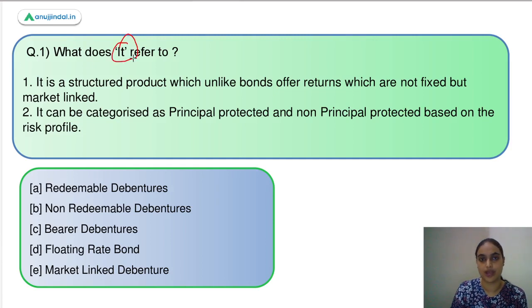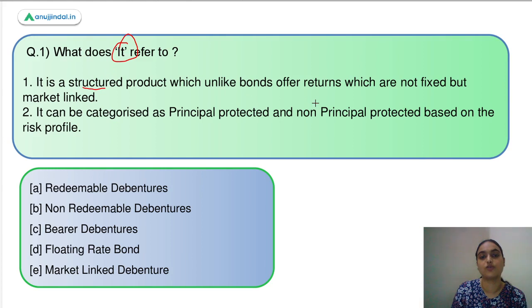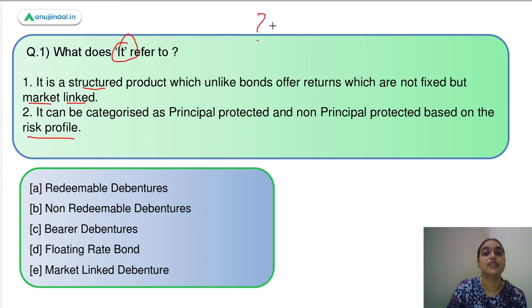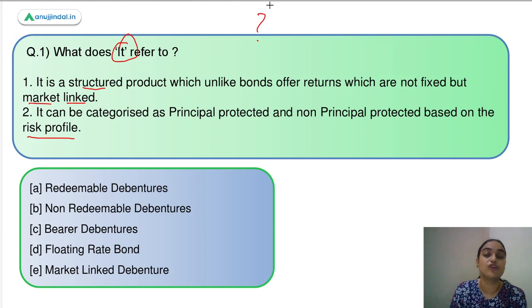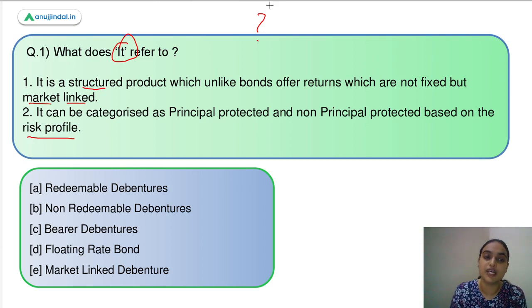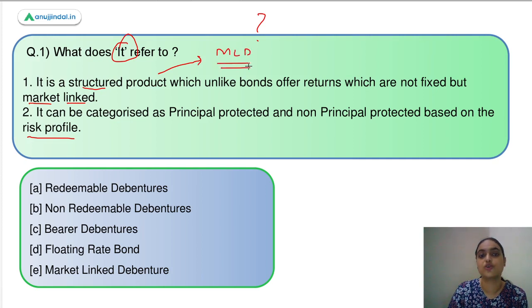Question number 1: we have two statements and we have to identify the concept they are talking about. The first says it is a structured product which, unlike bonds, offers returns that are not fixed but market-linked. The second says it can be categorized as principal protected and non-principal protected based on the risk profile. The answer is market linked debentures — option E.